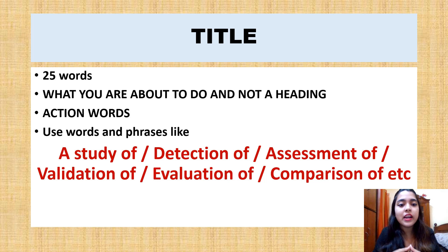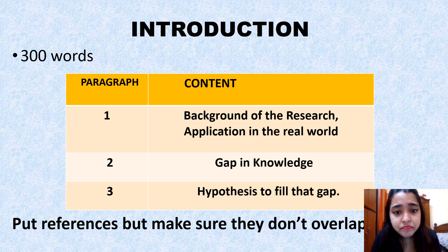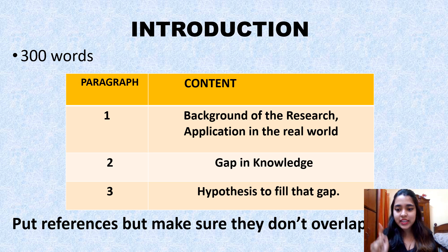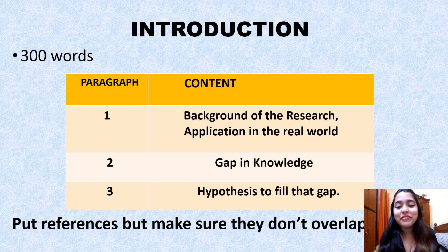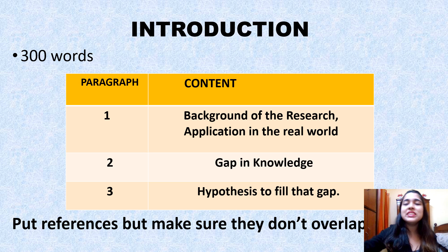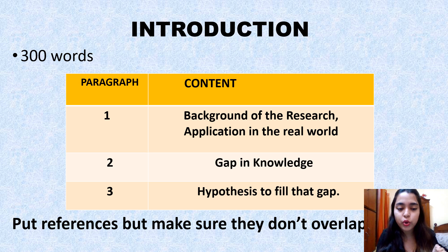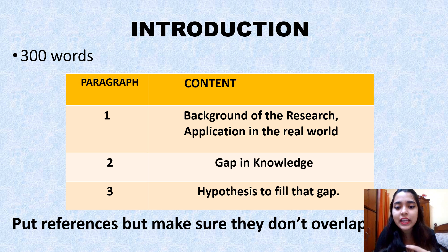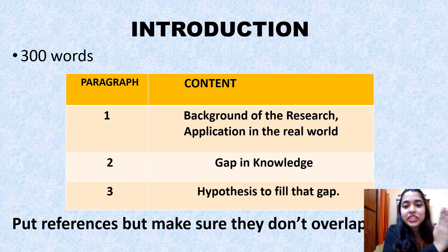The introduction is around 300 words. A very common problem is overlapping content. Clearly divide it into three paragraphs. In the first paragraph, write the background of the research — why you are doing it, its application in the real world, and the current status of knowledge. Here you are not yet talking about what you are going to do, so there is no overlap.